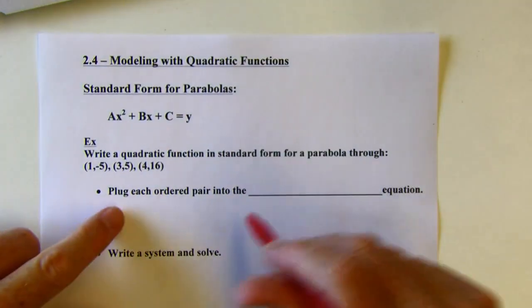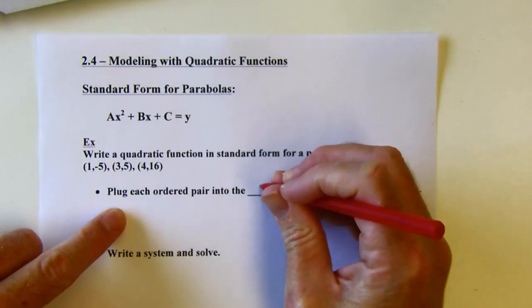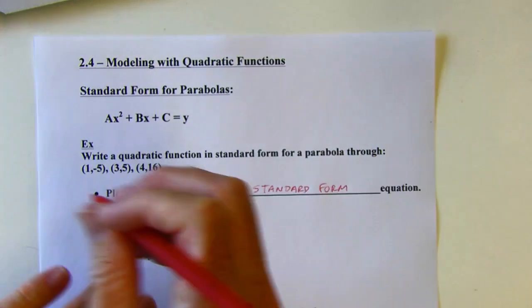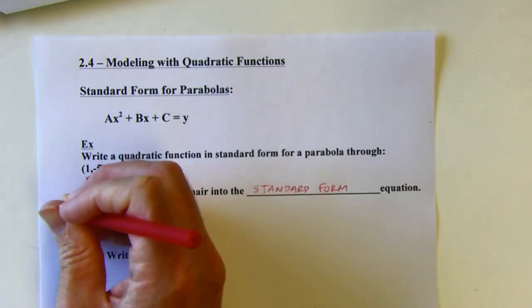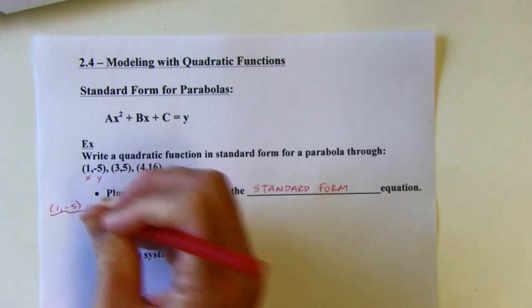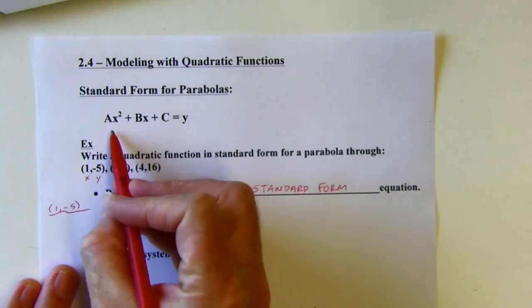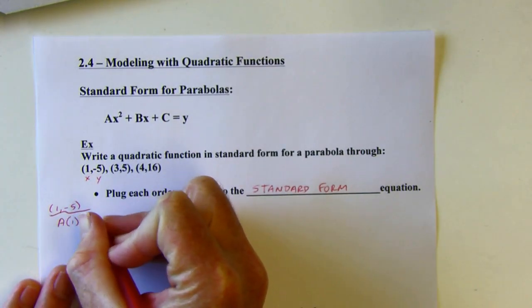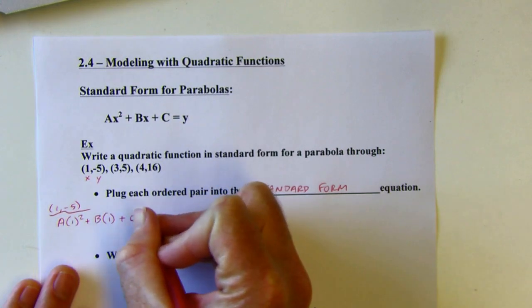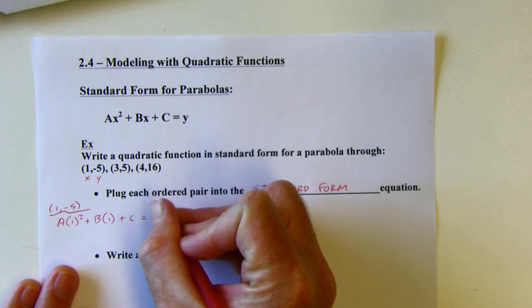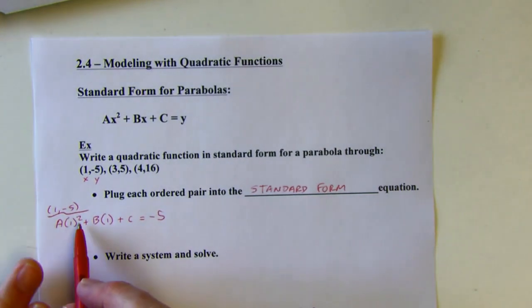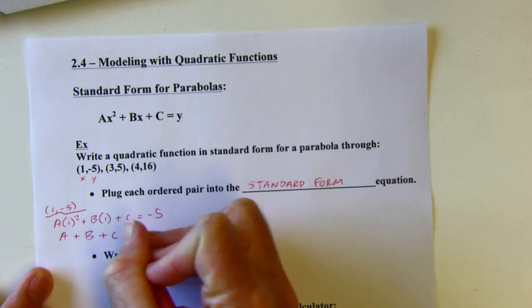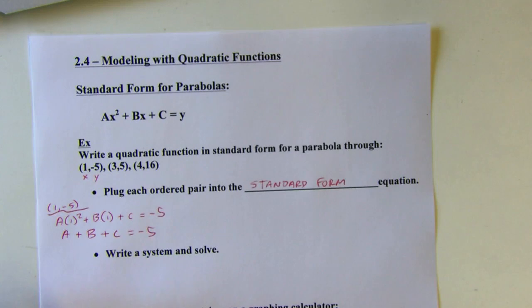What I want to do is plug each ordered pair into the standard form equation. I'll use this as an x, y pair. I'm putting 1 in for both of the x positions, and then I'm putting negative 5 in for y. Cleaning this up: 1 squared is 1, so this would be 1a, or just a. 1 times b is b. So there's my equation after I plugged in this x, y pair.